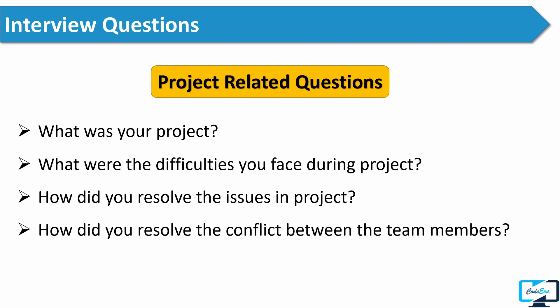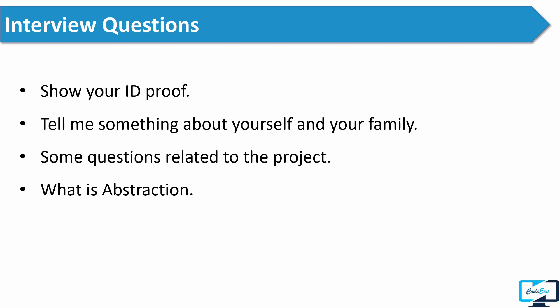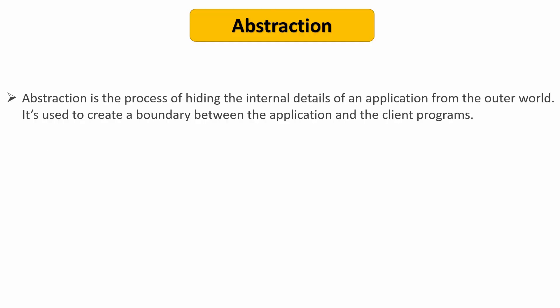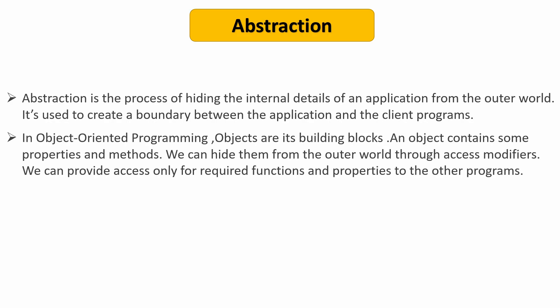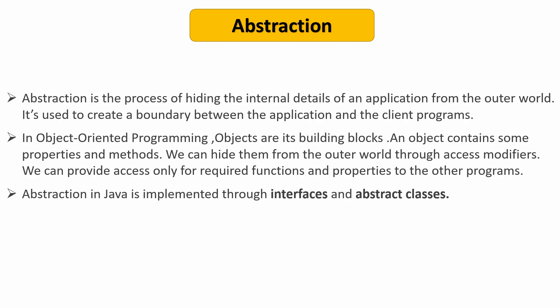If you want to know the answers of these questions, you can check out my previous videos. After this, the interviewer asked him what is abstraction. You can say abstraction is the process of hiding the internal details of an application from the outer world. It is used to create a boundary between the application and the client programs. In object-oriented programming, objects are its building blocks — an object contains properties and methods, which we can hide from the outer world through access modifiers. We can provide access only for the required functions and properties to other programs. In Java, we can achieve abstraction through interfaces and abstract classes.